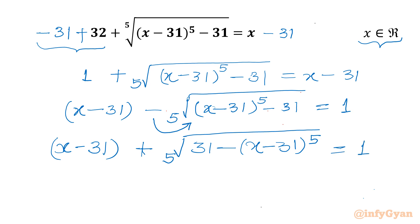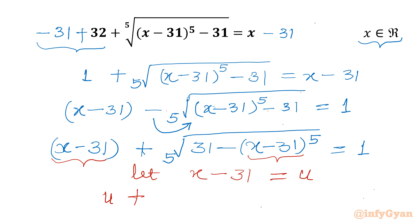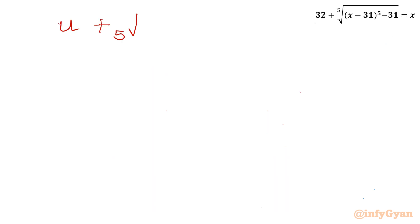Now it is time for substitution — we can see x minus 31 appearing. So let us consider x minus 31 equal to u. Then we have u plus the 5th root of (31 minus u) power 5.